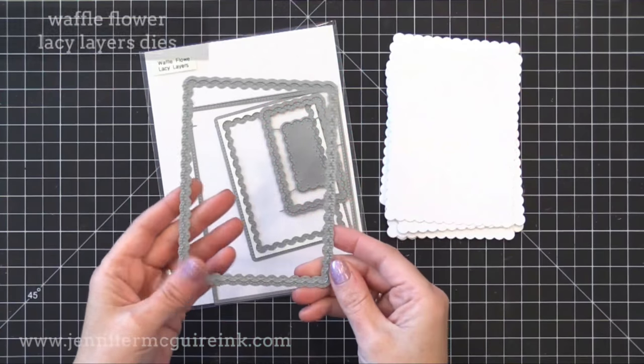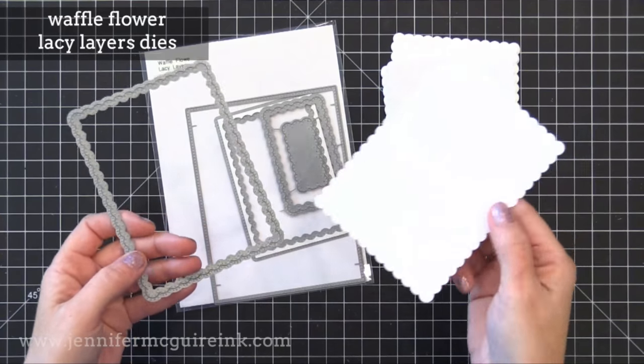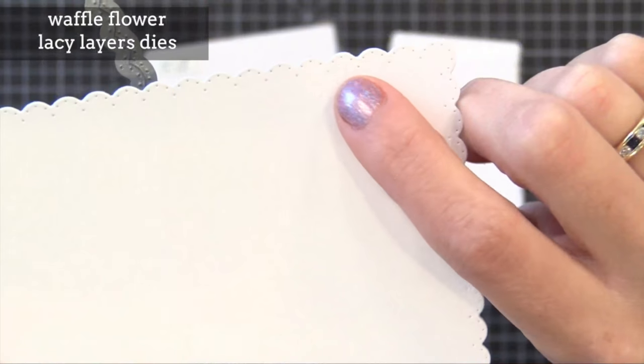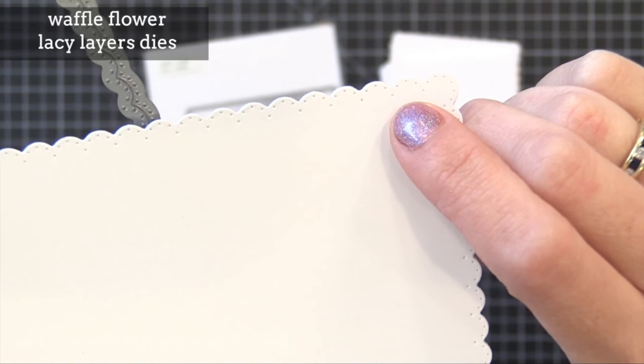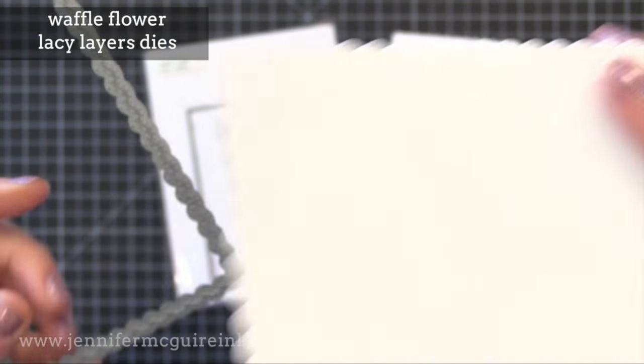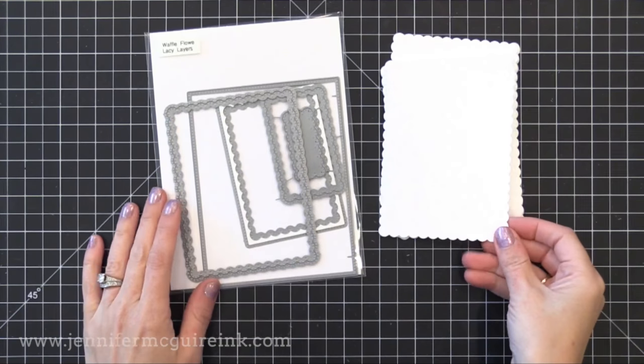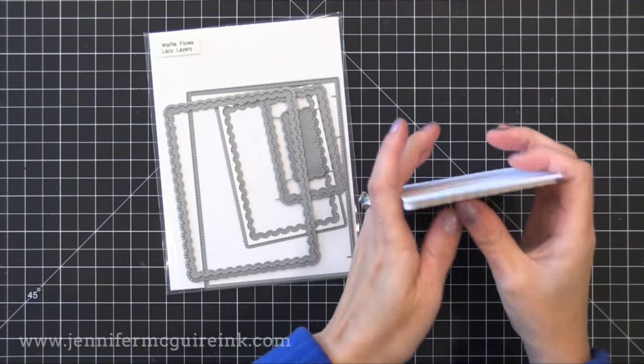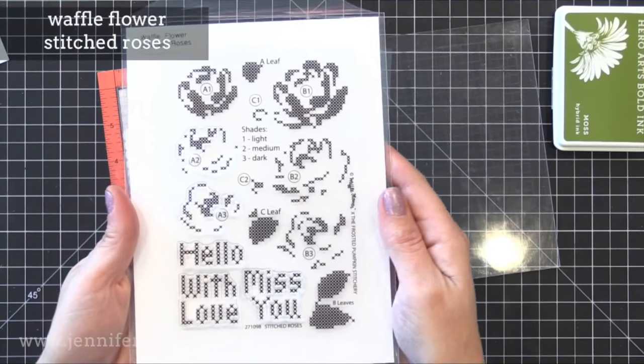So I went ahead and die cut some panels from this Waffle Flower Lacy Layers die. It creates these little details along the scallop border edge. I went ahead and die cut a bunch out of Neenah White 110 pound card stock, but you could use any white card stock.